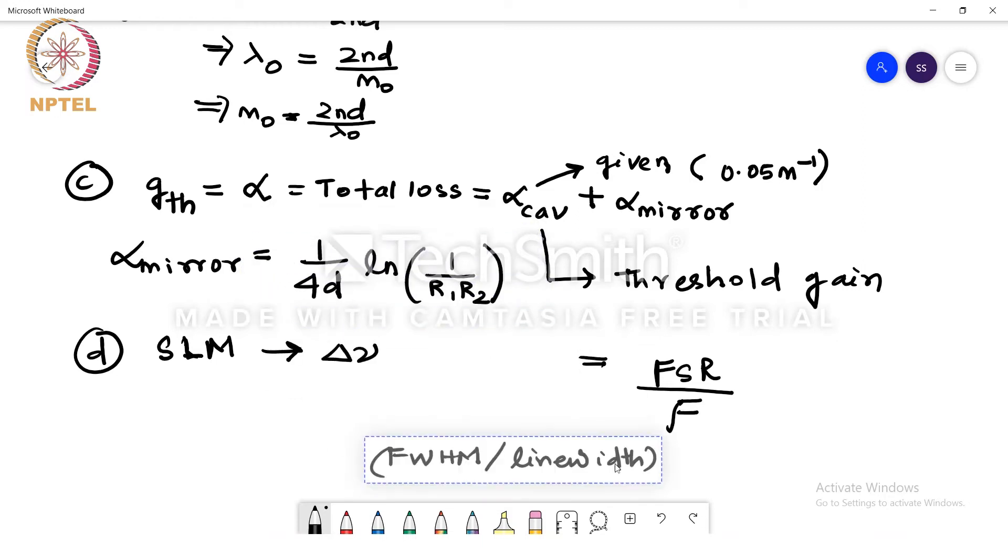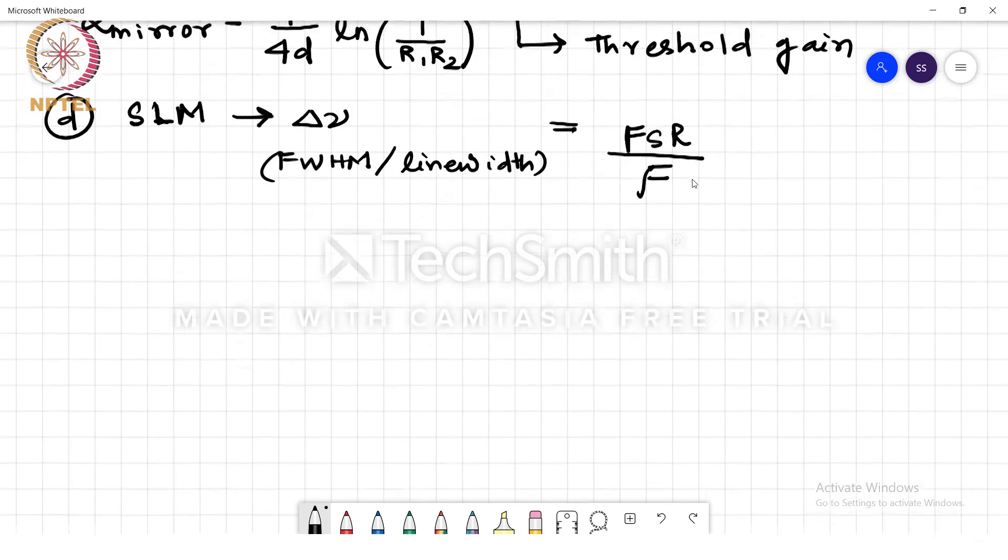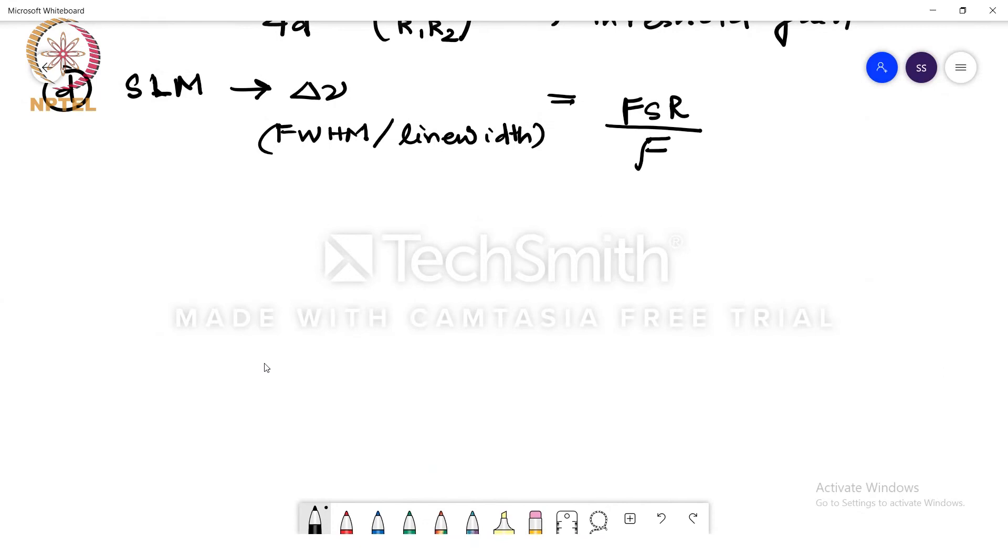Now the FSR of the cavity we already calculated in part B of the question. So that is known to us now. Now the finesse, finesse is equal to pi root r divided by 1 minus r. Now we are making an assumption here.